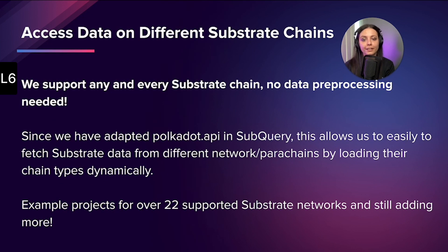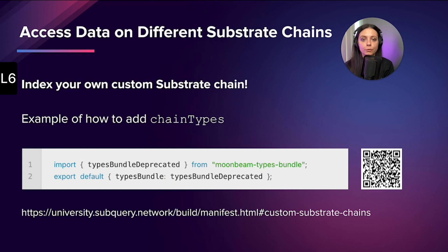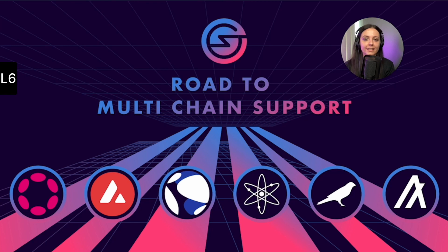With SubQuery you can access data on different substrate chains — we support every substrate chain with no data pre-processing needed. This allows you to quickly fetch substrate data from different networks and parachains by loading their chain types. We already have 22 substrate networks supported. Within the chain types file you import the proper file and include chain types within the manifest. We support additional types used by substrate runtime modules: typesAlias, typesBundle, typesChain, and typesSpec.